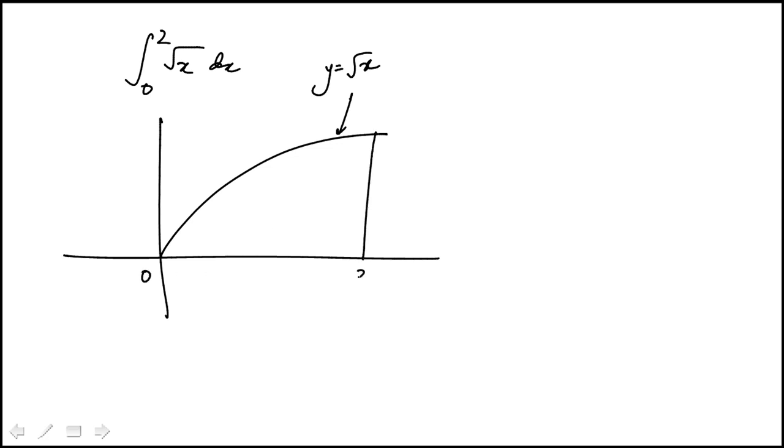So in this question we're given this function square root of x and we're asked to find the right Riemann sum. And so what we're going to do is, I'll just qualitatively draw this out, this would be the function square root of x. And we're looking at interval 0 to 2.